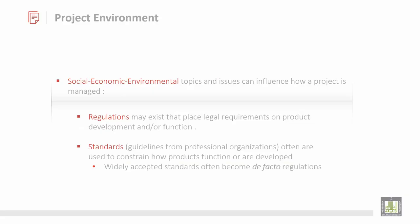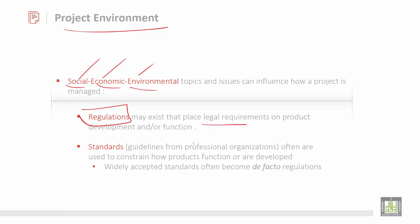What is project environment? It talks about three main factors — social, economic, and environmental topics — issues that can influence how a project can be managed. Very important is regulation. These regulations are very important because there may exist legal requirements on product development or function. So these government regulations are very important. We should abide by the rules and regulations before starting a particular project.